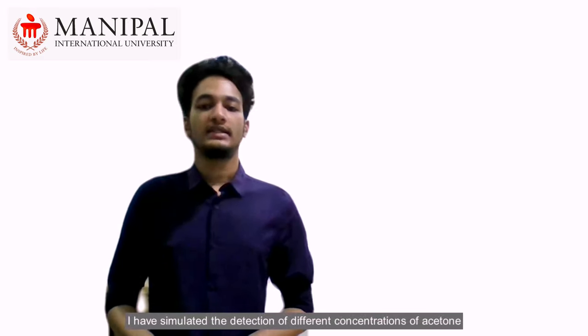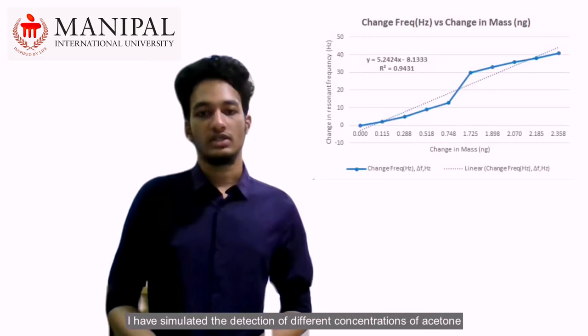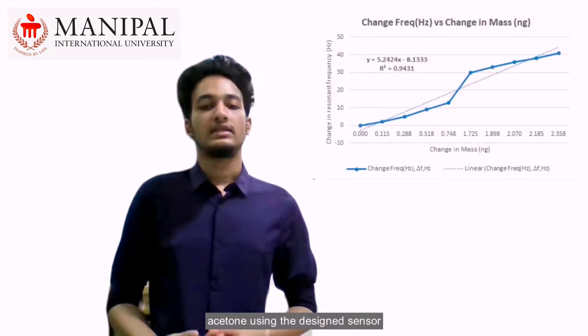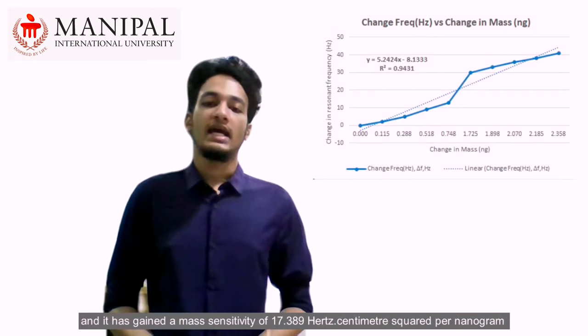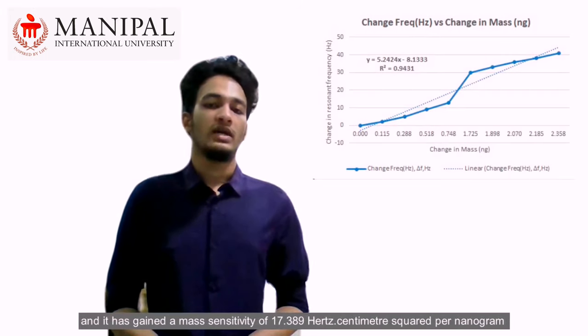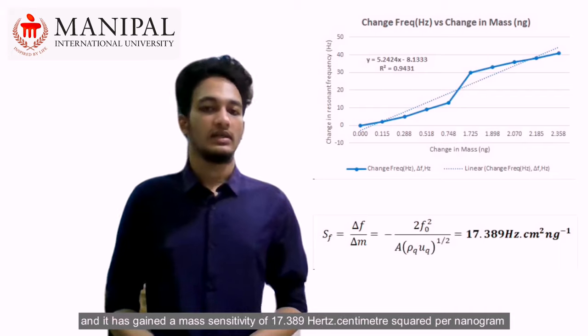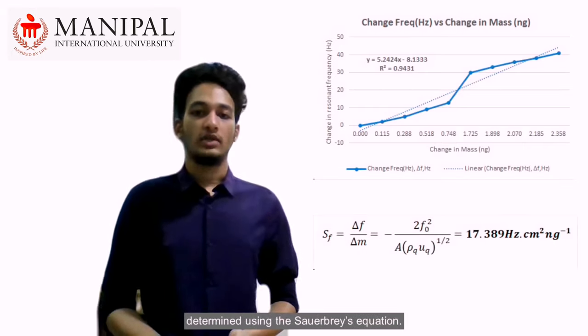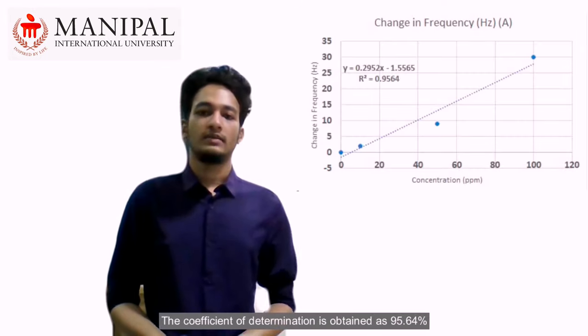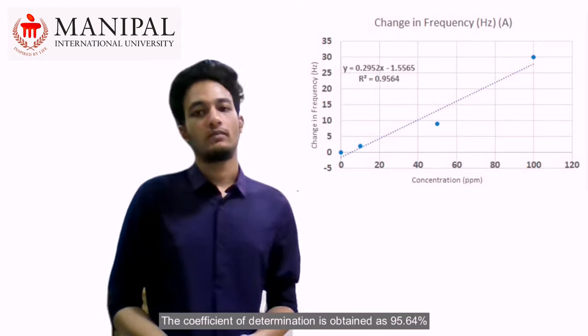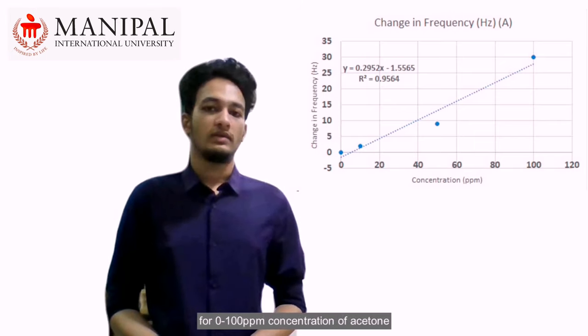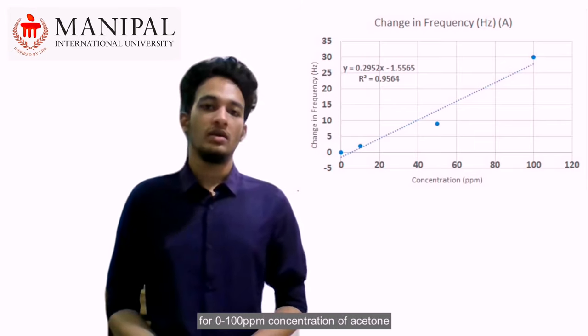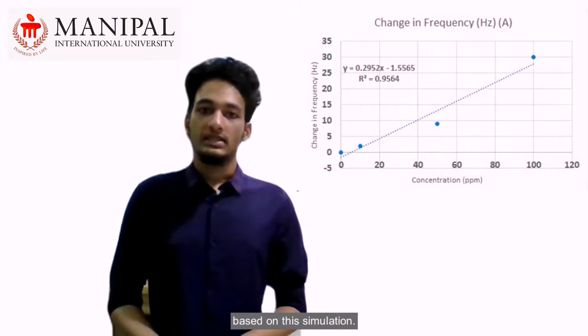I have simulated the detection of different concentrations of acetone using the designed sensor and it has gained a mass sensitivity of 17.389 Hz cm² per nanogram determined using the Sauerbrey equation. The coefficient of determination is obtained as 95.64% for 0 to 100 parts per million concentration of acetone based on this simulation.